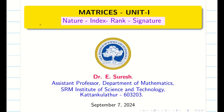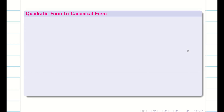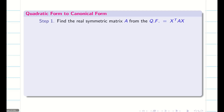Dear students, in today's session we are going to learn how to find the nature, index, rank and signature for a given quadratic form which is reduced into canonical form — simply we will take it as NIRS. Before we find the nature, index, rank and signature, let us have a quick recap of what we did in our previous video: how to reduce the quadratic form to canonical form.